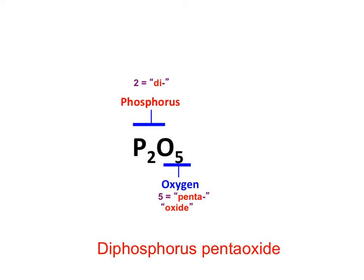From your list of prefixes, you will notice that the two has a prefix of di and the five has a prefix of penta. So following the rules, we're going to take the first non-metal. We're going to give the prefix di, regular element name phosphorus.